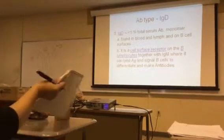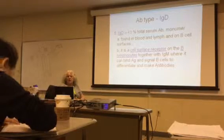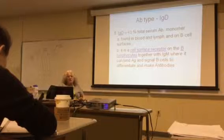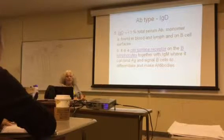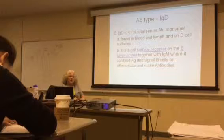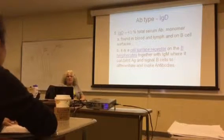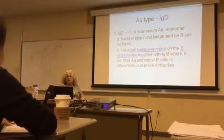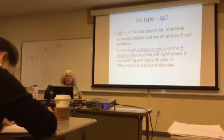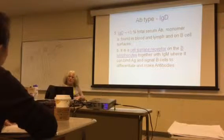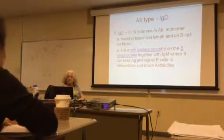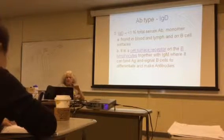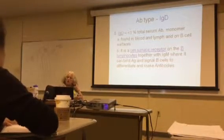IgD is less than one percent of the antibodies in the serum. It is a monomer found on B cell surfaces and acts as a cell surface receptor on the B lymphocyte. Together with IgM, it is also a cell surface receptor on the lymphocyte. It can bind to antigens and signal the B cells to differentiate and produce antibodies.